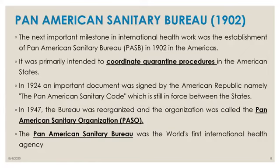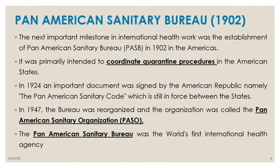The next important milestone was the establishment of the Pan American Sanitary Bureau in 1902 in America, primarily intended to coordinate quarantine procedures in American states. In 1924, the Pan American Sanitary Code was signed. In 1947, the organization was renamed the Pan American Sanitary Organization. The Pan American Sanitary Bureau was the world's first international health agency — don't confuse it with the World Health Organization.